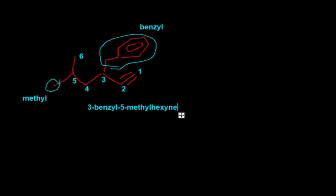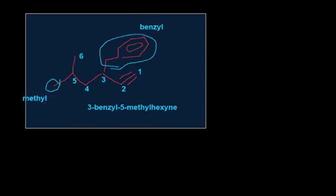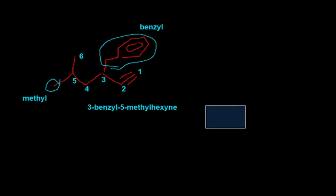Similarly, if there were two alkynes you'd put di-, three would be tri-, four is tetra-, five is penta-, six is hexa-, and so on. That's it for alkynes. I will do halogens next.